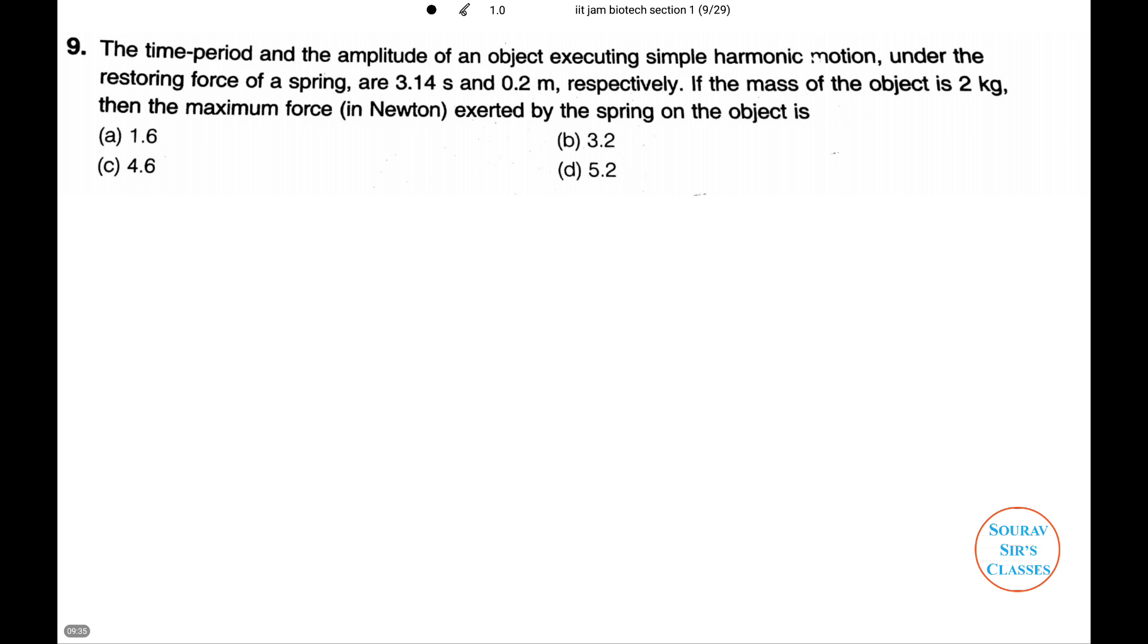The time period and amplitude of an object executing simple harmonic motion under the restoring force of a spring are 3.14 seconds and 0.2 meters respectively. If the mass of the object is 2 kg, then the maximum force in Newtons exerted by the spring on the object is 1.6, 4.6, 3.2, or 5.2. We are given T equals 3.14 seconds, A equals 0.2 meters, and mass equals 2 kg.